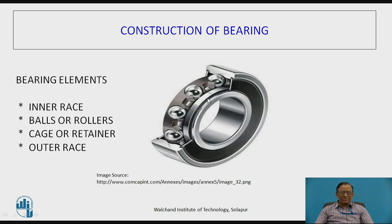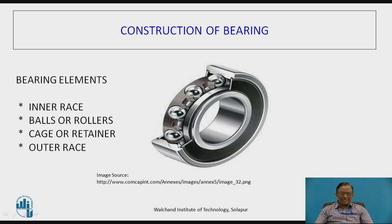The basic elements of the bearings are shown over here. This is the inner race which is normally mounted on the shaft which is rotating. These are the balls in case of ball bearings or rollers in case of roller bearings, which are maintained in their radial position by a cage or retainer. The cage or retainer separates the balls from each other and maintains them in their radial position, which is why it is also called a separator. And then there is the outer ring or outer race. So this is the construction of the bearing for ball or roller bearings.